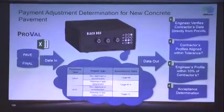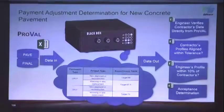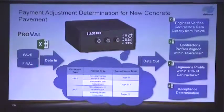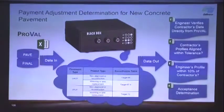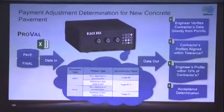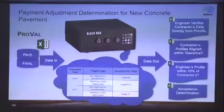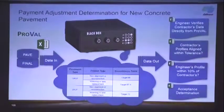This is the payment adjustment spreadsheet — the black box. The pave profile and final profile data go in, and the data out is a tool for the resident engineer to verify information: whether profiles brought in were aligned within tolerance, and whether a Caltrans-run profile was within 10% of the contractor's profile.